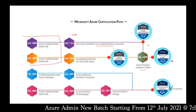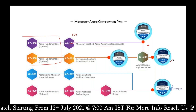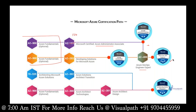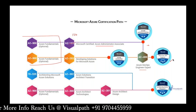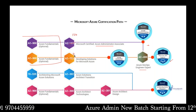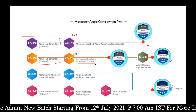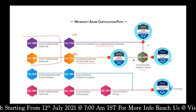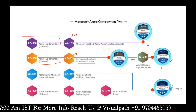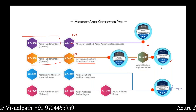After AZ-104 plus AZ-400, you'll be certified as an Azure DevOps Engineer Expert. If you're from a development background and want to build a career as an Azure developer, the content is AZ-204, which covers developing solutions in Microsoft Azure. AZ-204 plus AZ-400 also leads to the Azure DevOps Engineer Expert certification. So if you're looking for DevOps, those are the two paths to achieve it.